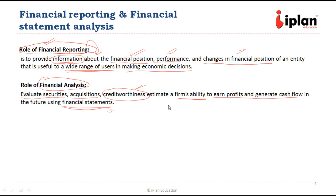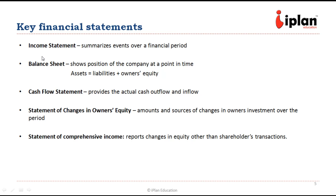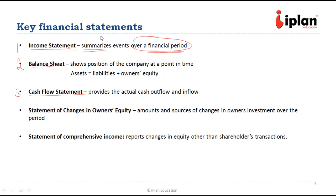The three most important financial statements are the income statement, balance sheet, and cash flow statement — the three important pillars that provide the right picture of a company. The income statement summarizes the events in the company over a financial period. It covers what kind of income the company generated, what were the expenses, and what are the profits or losses. That is why it is also called the profit and loss, or P&L statement — it is defined for a period.